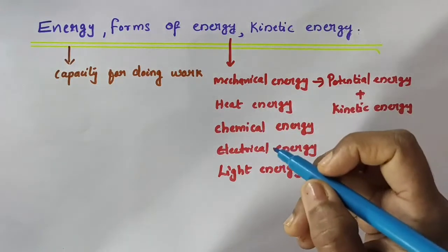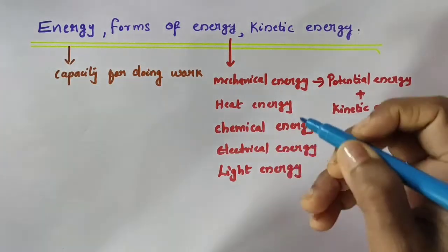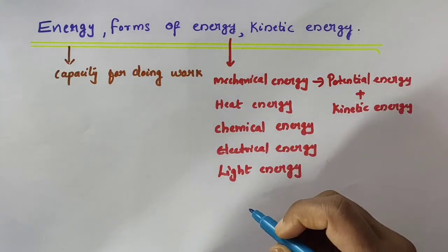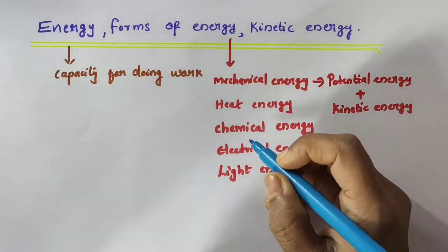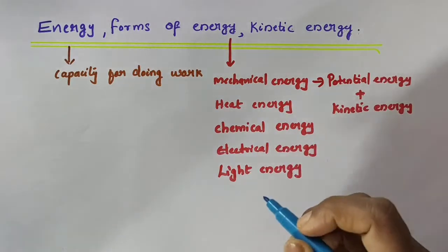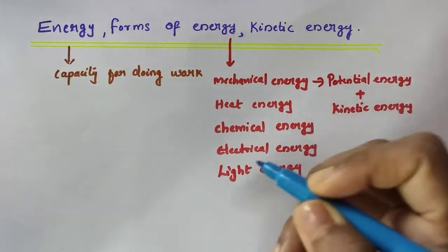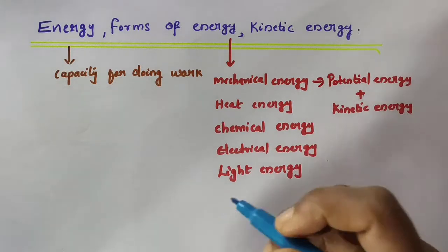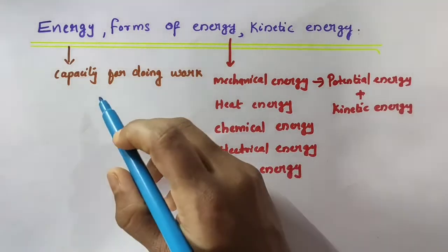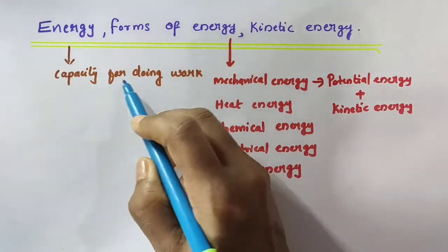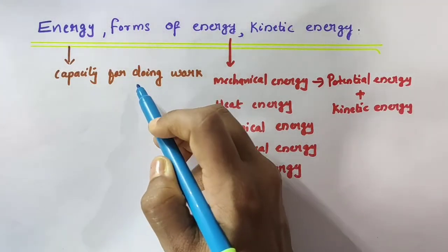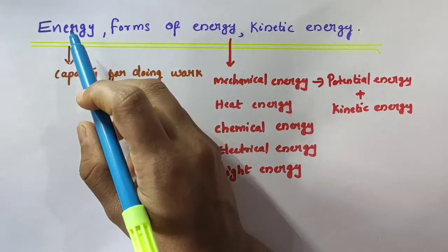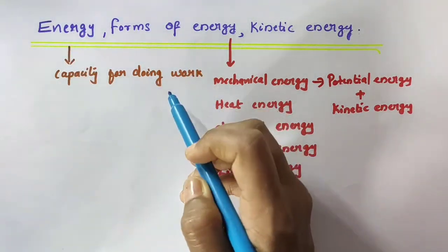An object having a capability to do work is said to possess some energy. The object which does work loses energy, and the object on which the work is done gains energy. In physics, energy is the capacity for doing work. Any object that possesses energy can do work.